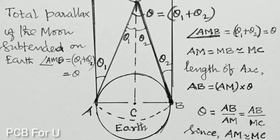Hence, the alternate angles are equal to theta1 and theta2 respectively. So, the angle subtended at the moon, theta equals theta1 plus theta2.